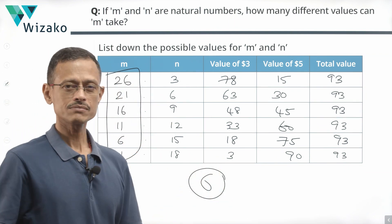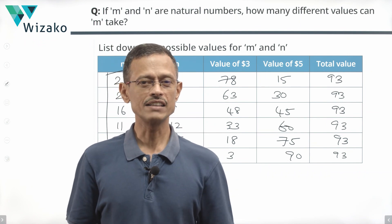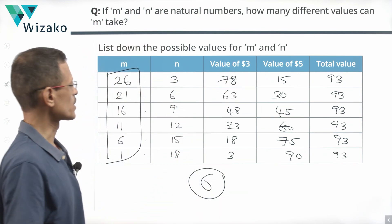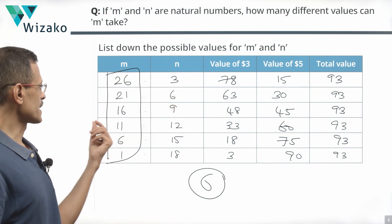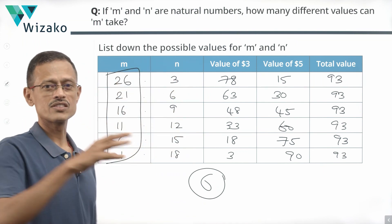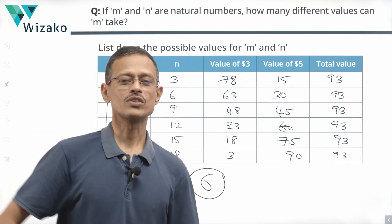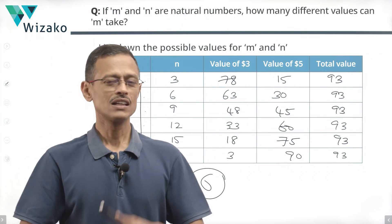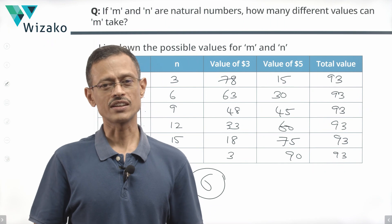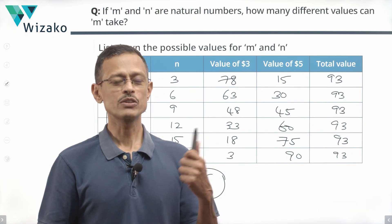So M can take 6 possible values. Why was this not a typical linear equation question? We had one equation (3M + 5N = 93) but not a second equation for the total number of certificates. We were finding how many different combinations of natural numbers M and N satisfy 3M + 5N = 93 — essentially finding all valid right-hand sides for the missing second equation: 26+3, 21+6, 16+9, 11+12, 6+15, 1+18. These are the questions that appear when you're doing very well in the GMAT quant section.